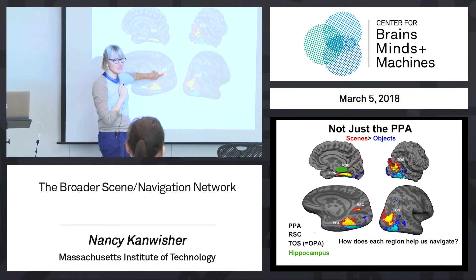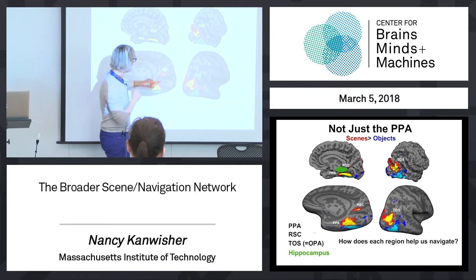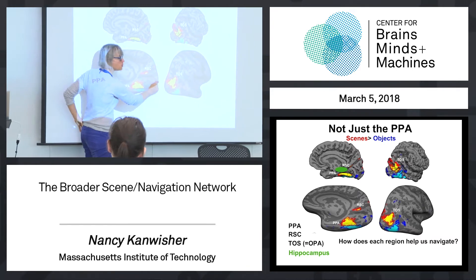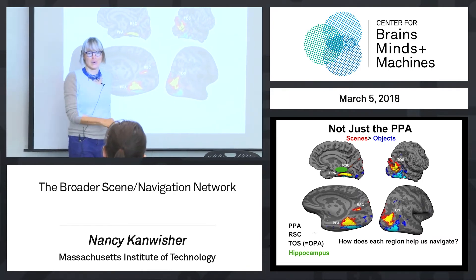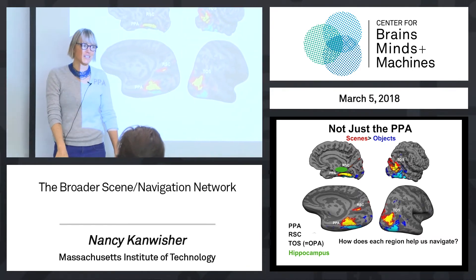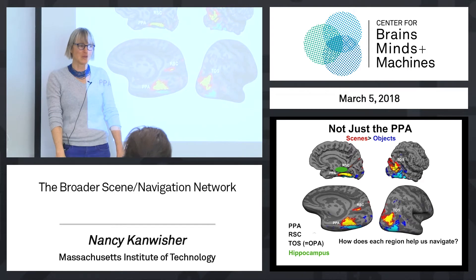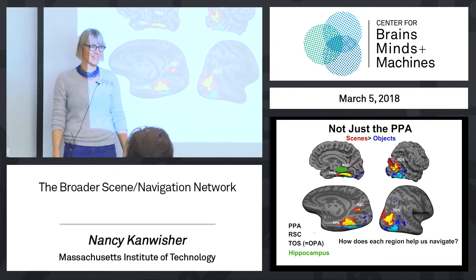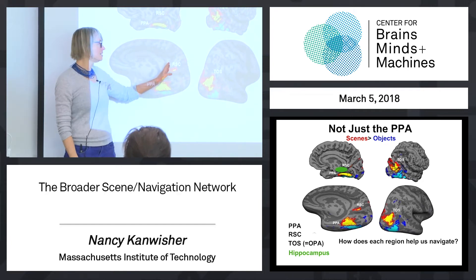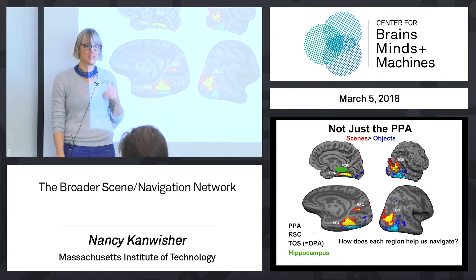When Russell Epstein and I first worked on the PPA, we saw that blob. But this is primary visual cortex right here, and we thought, oh no, we're really close to low-level visual cortex. That's probably a visual confound — we're going to shut up about that region. Turns out it's not a visual confound. It's really a scene-selective region if you do it right, as many subsequent studies have shown.